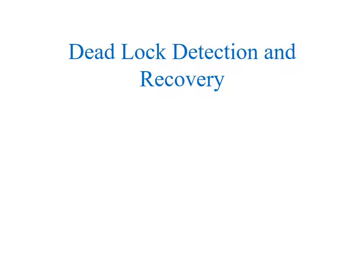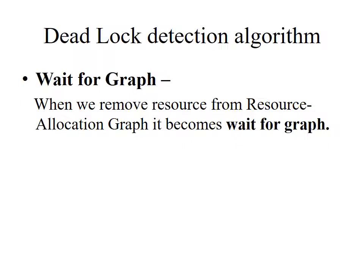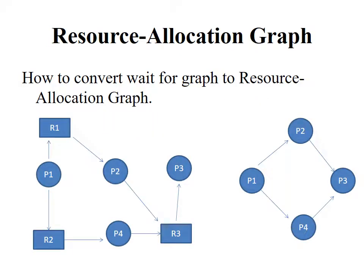First we will see what is wait-for graph. Wait-for graph is formed when we remove resources from the resource allocation graph — it becomes a wait-for graph. Let us see the resource allocation graph and how to convert it into a wait-for graph.